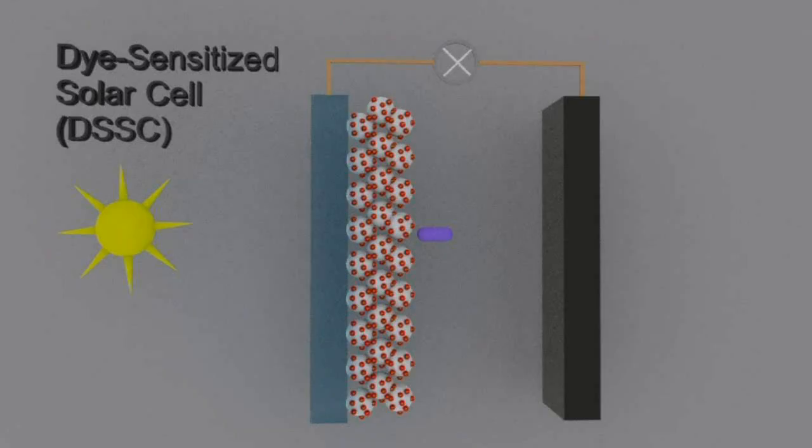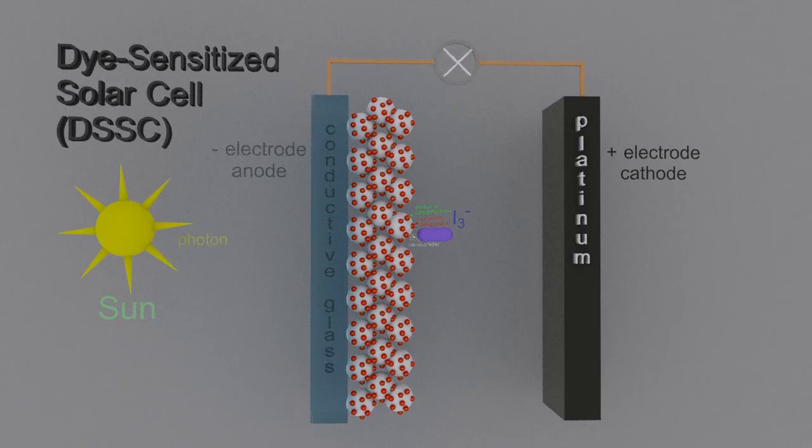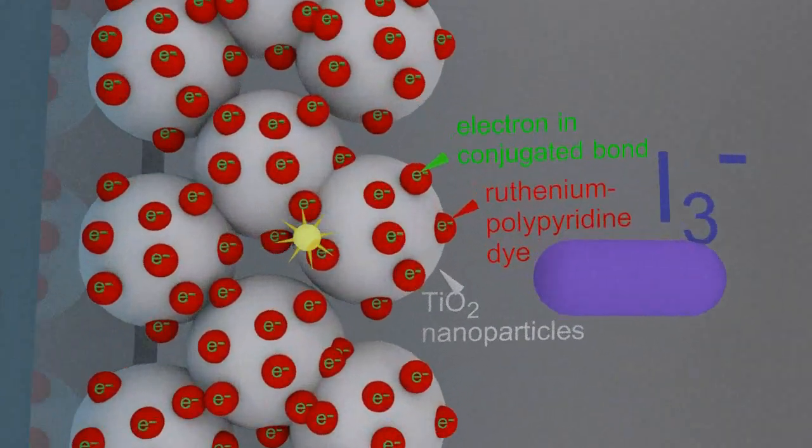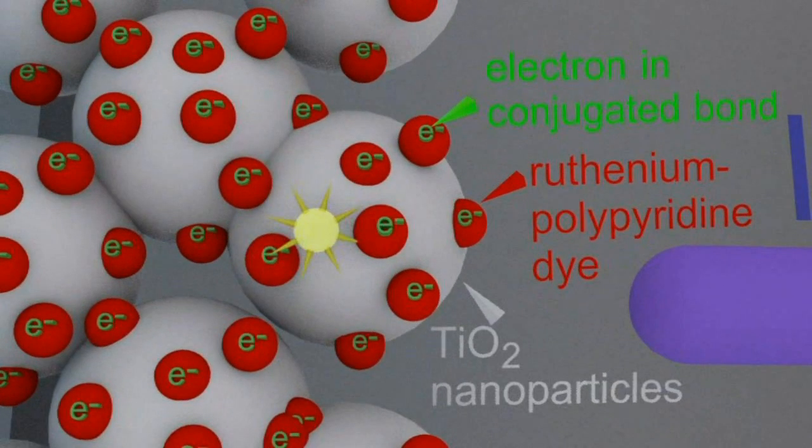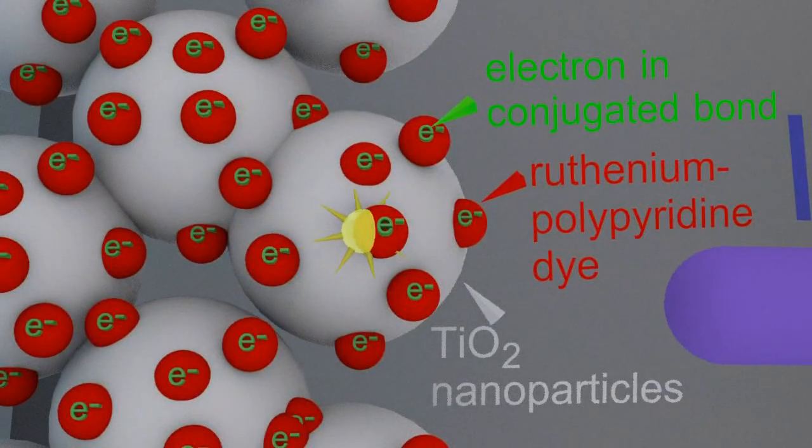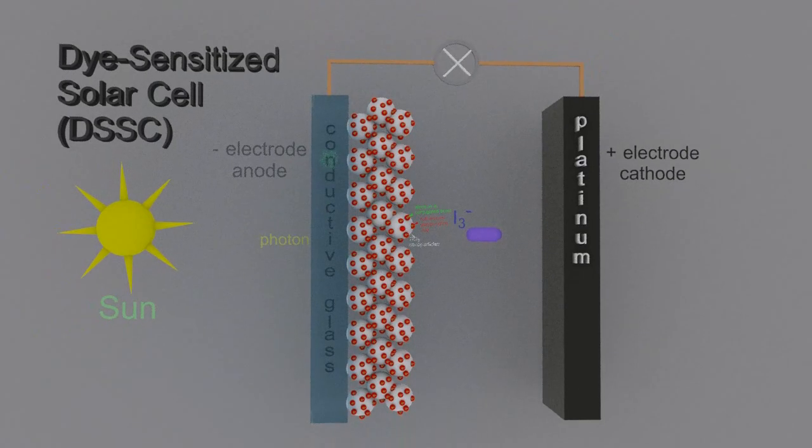Alright, let me add some labels and we'll go through it step by step. The sun releases a photon, a particle of light, towards the ruthenium polypyridine dye which is attached to titanium dioxide nanoparticles. That dye contains an electron in a conjugated bond, a bit more detail on that later. When that sunlight hits the dye, it pops off that electron which travels through the titanium dioxide.